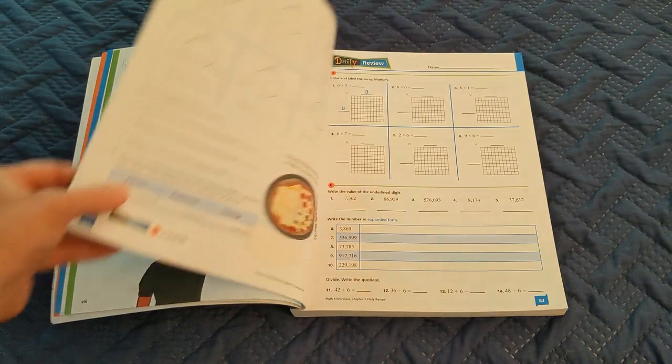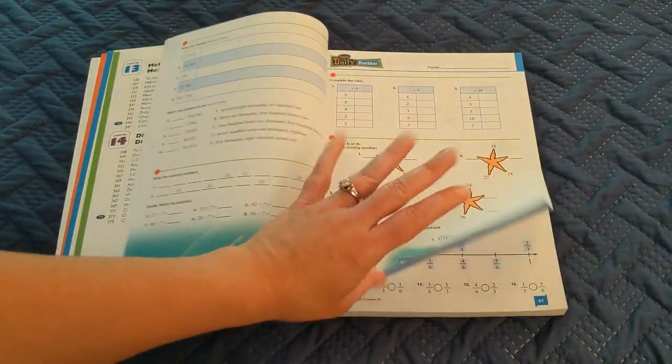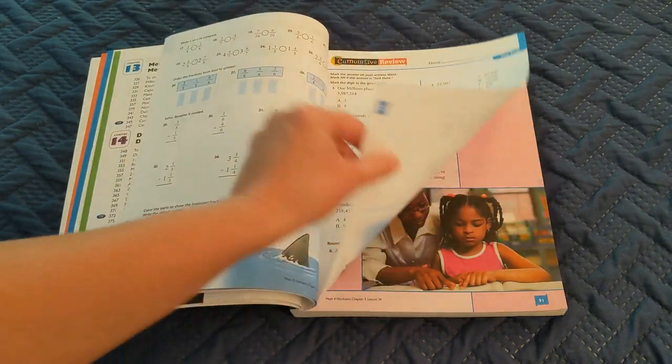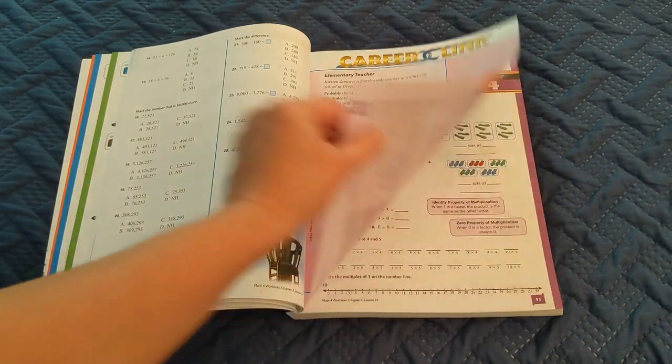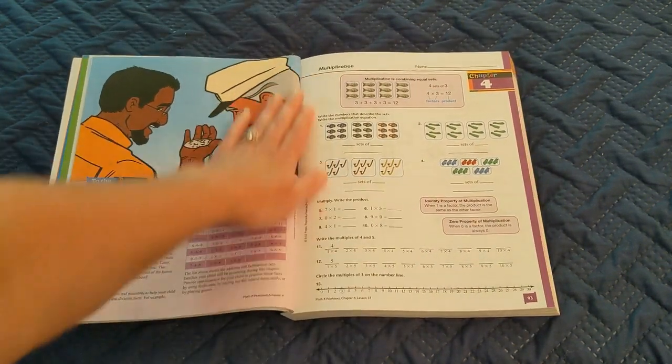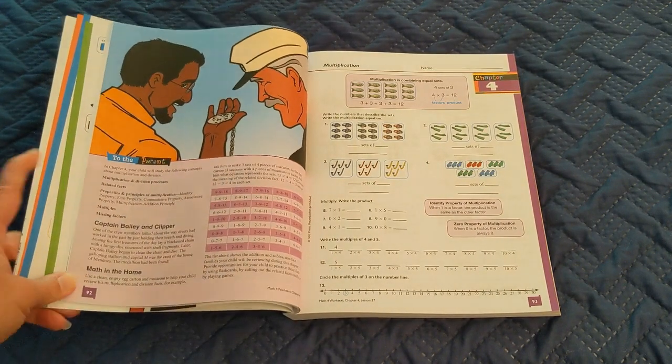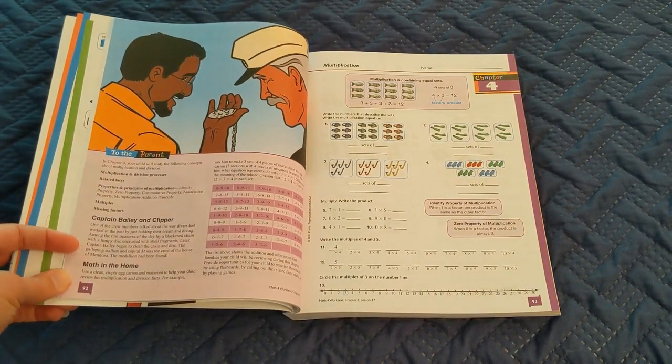I'm going to show you Chapter 4 because one thing that's at the beginning of every chapter is this little section to the parent.